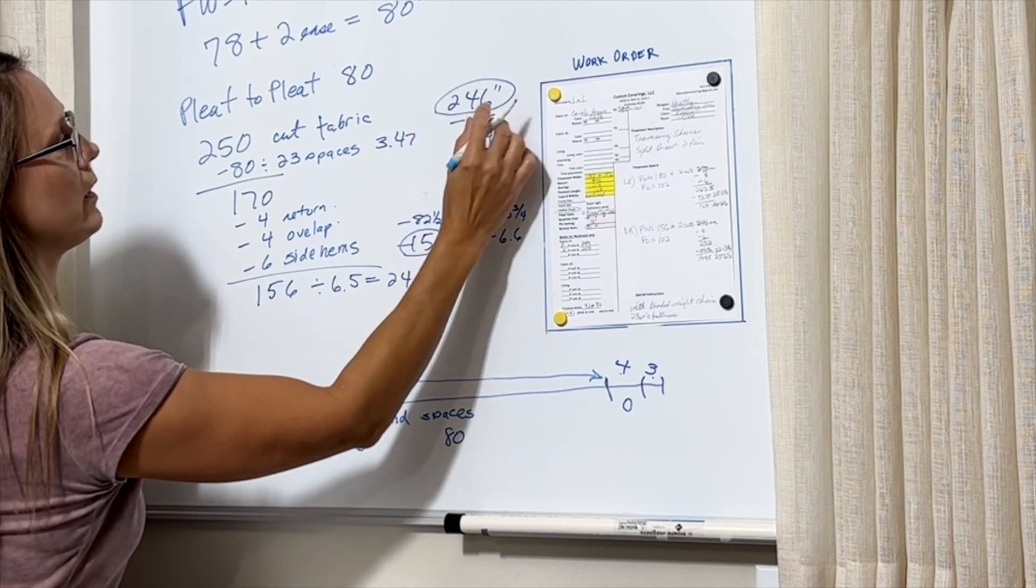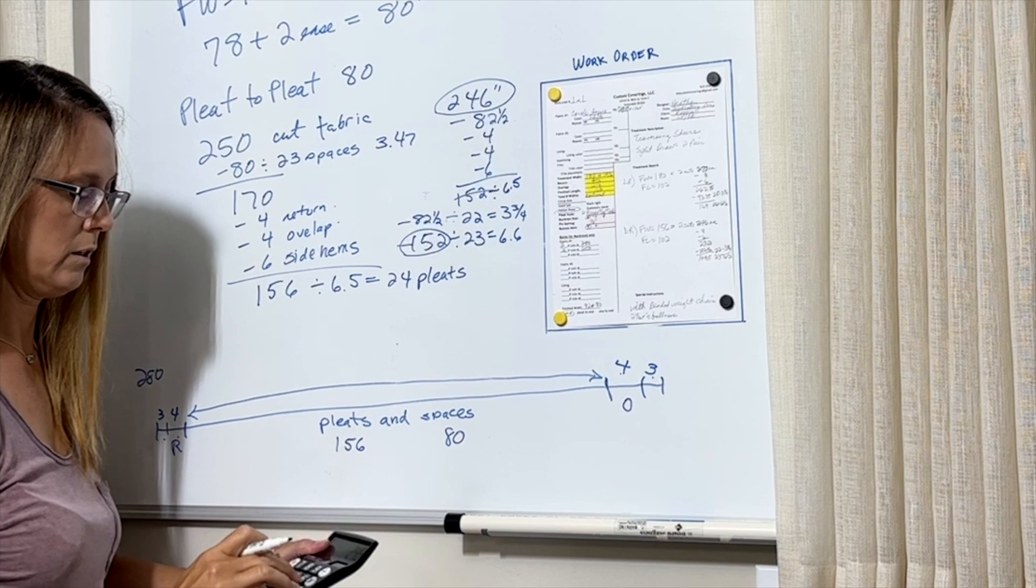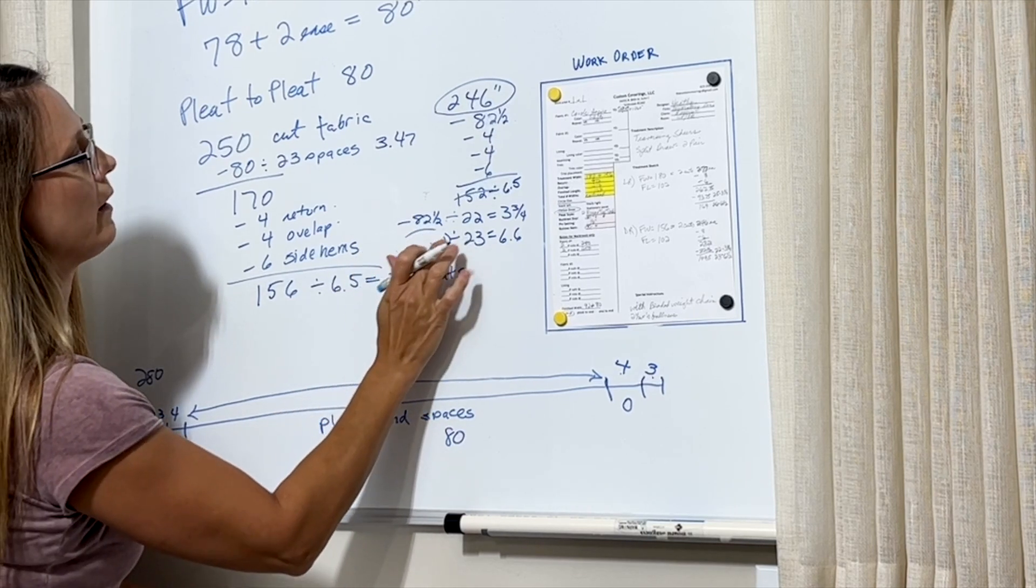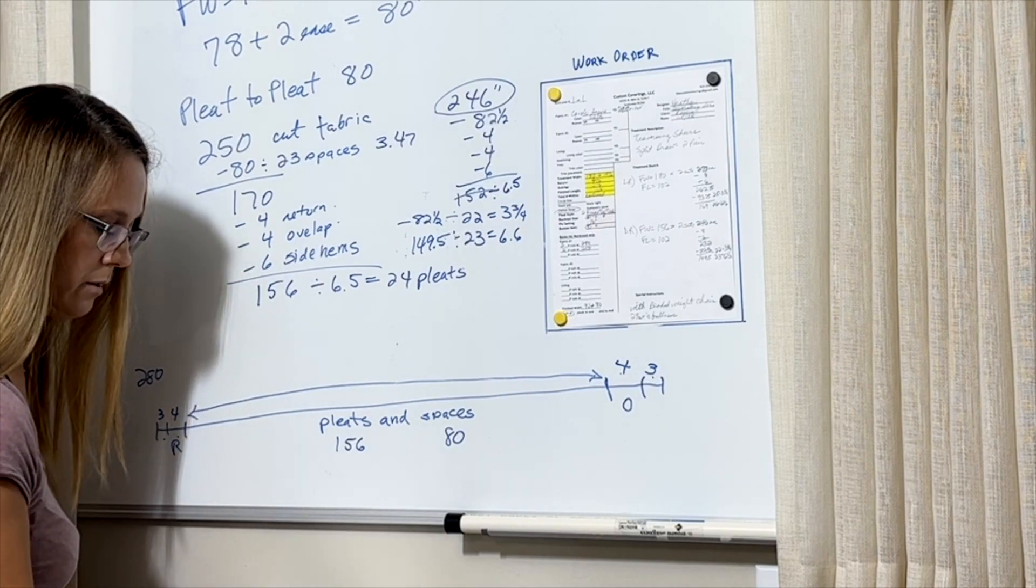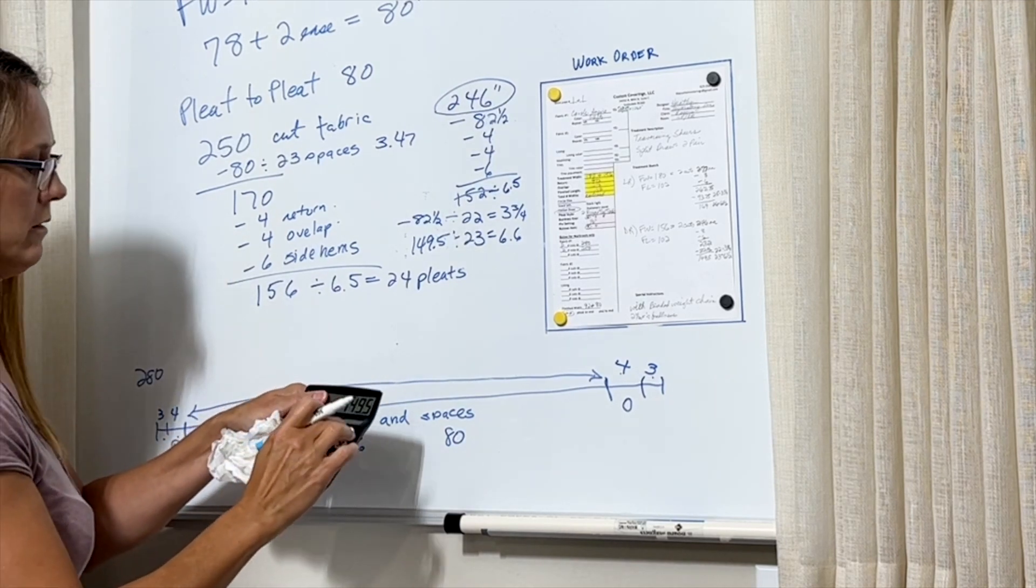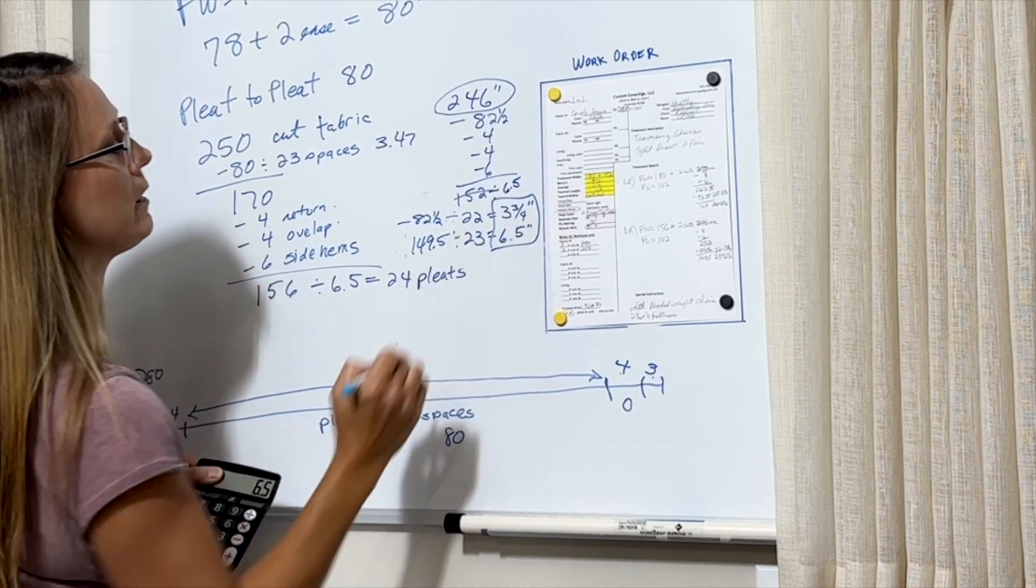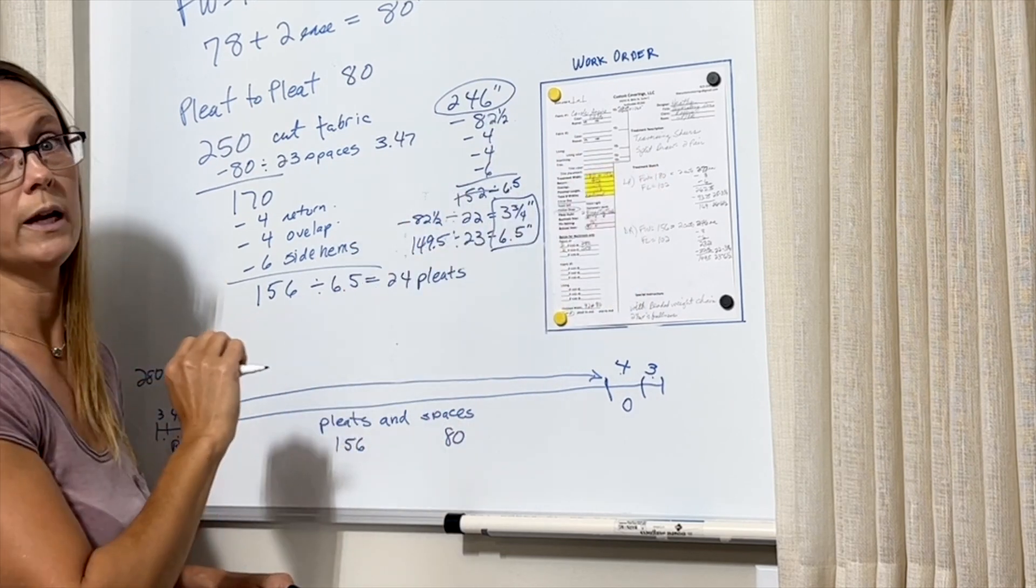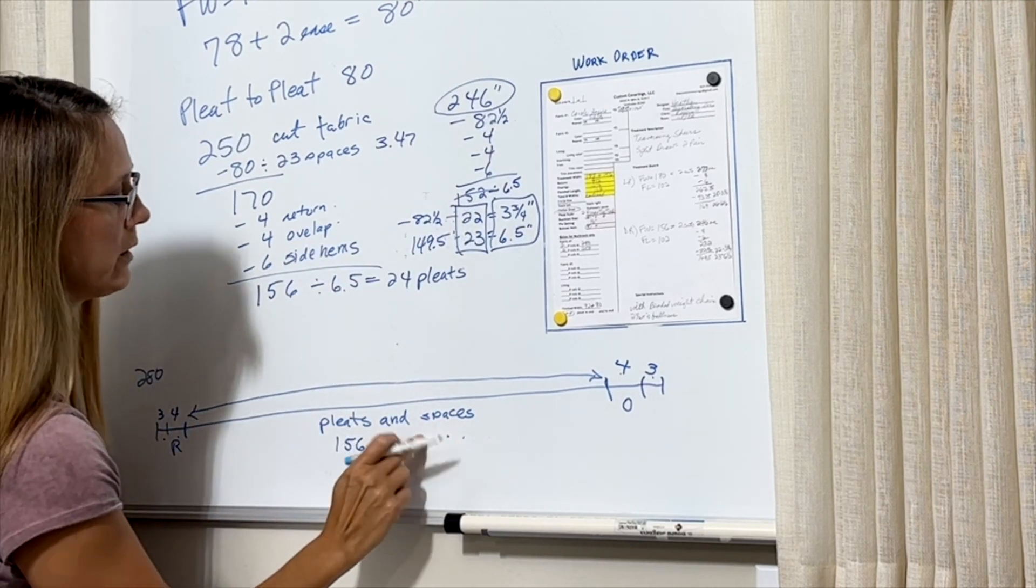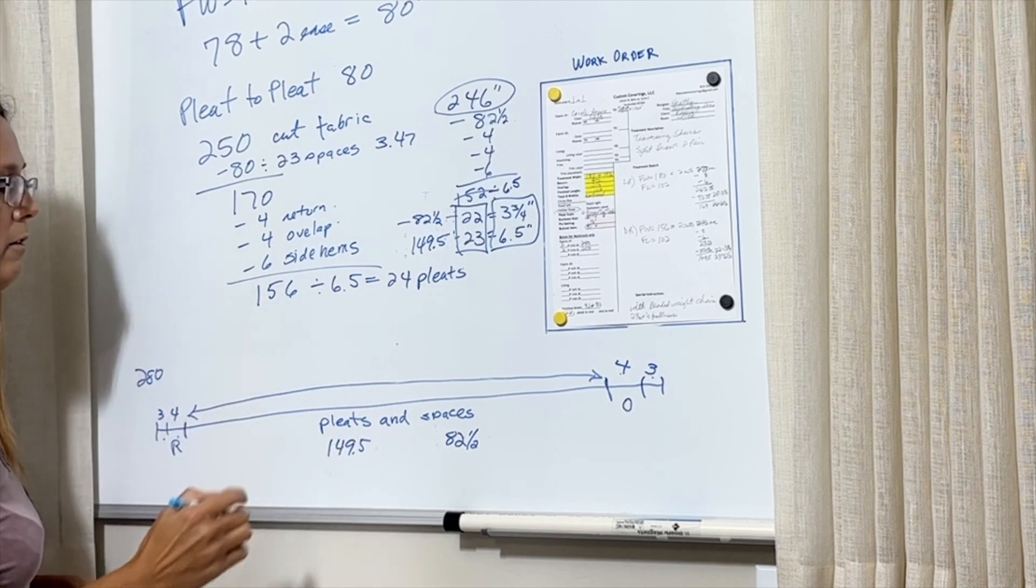So let's redo this math. So we have 246, and we have to change this part to 82.5. And then that means this will be a different number. 246 minus 82.5 minus 14, that means instead of 152, we have 149.5. 149.5 divided by 23 pleats is - look at that - 149 divided by 23 is 6.5 inches. So now our pleats and spaces are exactly the same for this pair at 156 as they are for this pair that's 180. So that means we need 22 spaces and 23 pleats. And we're going to end up at 82.5. And here we're going to use 149.5 inches of fabric to put into the pleats.